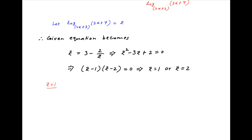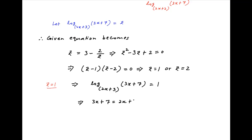In the first case when z equals 1, log of (3x plus 7) to the base (2x plus 3) equals 1, which implies that 3x plus 7 equals 2x plus 3. Therefore x equals minus 4.